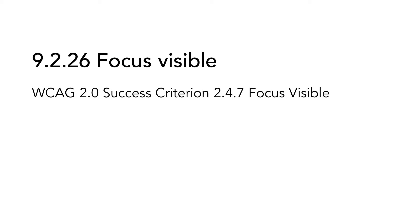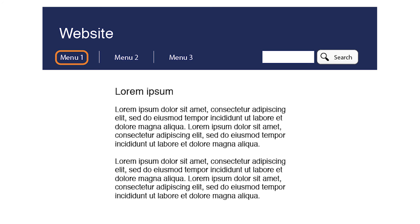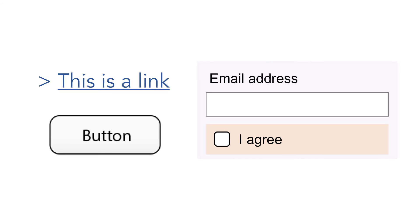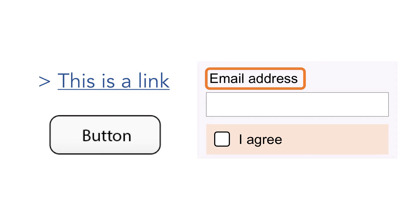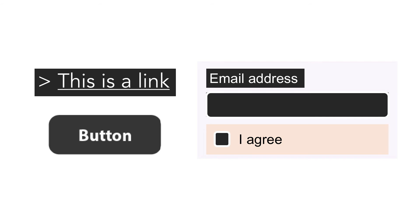9.2.26 Focus Visible is based on WCAG 2.0 Success Criterion 2.4.7 Focus Visible. Ensure that users who navigate with a keyboard can distinguish which element has focus when they navigate through a webpage. Each link, button, form control or other item that can receive focus with keyboard navigation should be clearly highlighted. This can be done in different ways. Two common examples would be to display a frame or to invert colors on the object that receives focus.